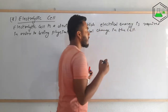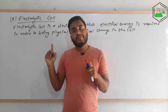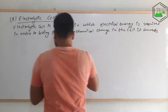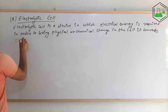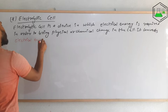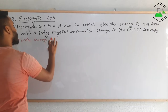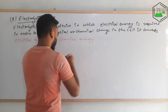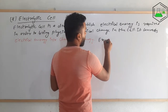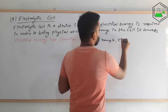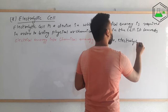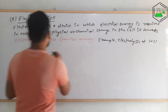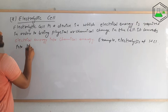This device converts electrical energy into chemical energy. A very good example of this is the electrolysis of hydrochloric acid, that is HCl, into hydrogen and chlorine.